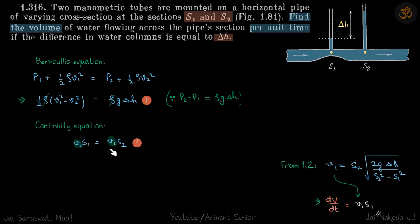So we have these two equations and our variables are v1 and v2. We solve that and we can find any one of v1 or v2. So v1 came to be this, and our volume flow rate is v1 s1. We'll put the value of v1 here and this will be our answer.